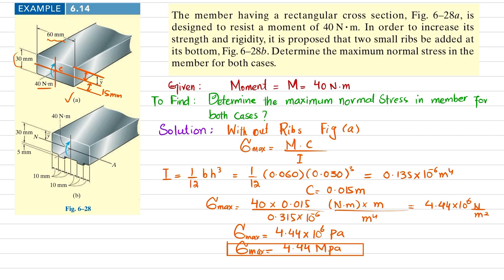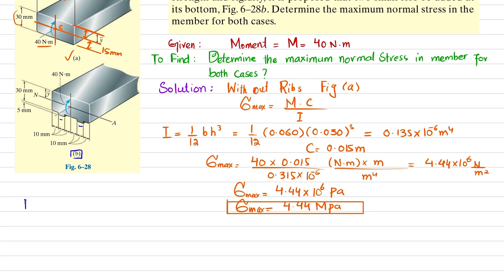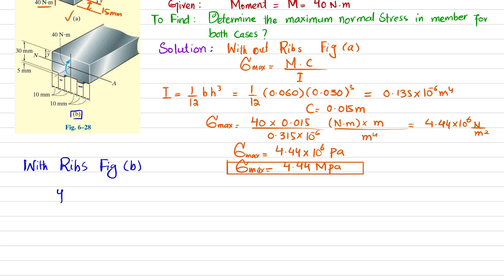Now for case B — with ribs. Two small ribs are added at the bottom. If we take the mid of the section, it will not be symmetrical, so the centroid or neutral axis will not be at the mid of the 30 mm height. We must first find the centroid location using the formula ȳ = Σ(y'·A) / ΣA.